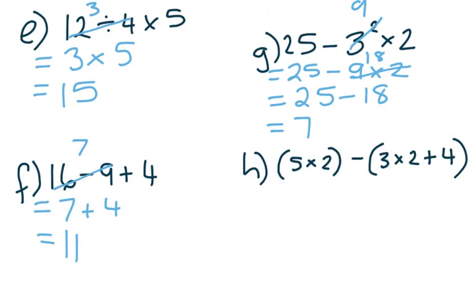Part H, there's quite a bit involved here. We've got two sets of brackets and then within a bracket we've also got a multiply and an add. So the first step is to do the brackets. So straight away we know that 5 times 2 is 10. We can do that one. So we're going to have 10 take away something.